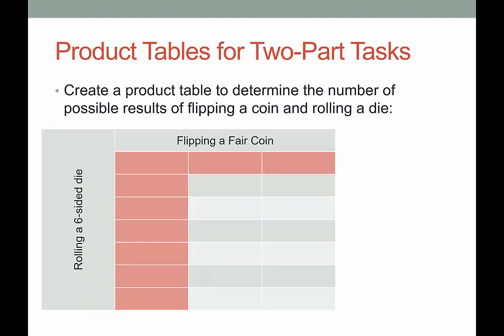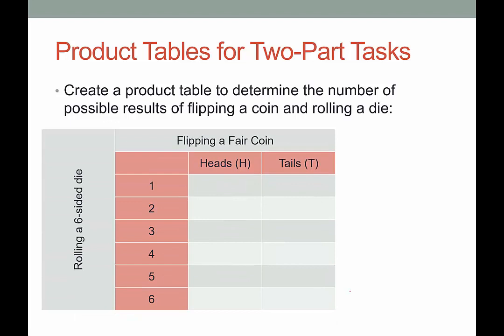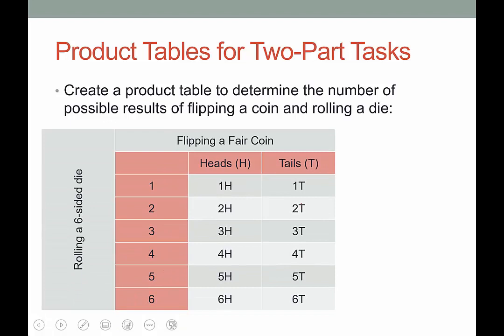For the product table, we're going to label the rows. In this case, rolling a six-sided die — the possible outcomes 1 through 6 go in the header column. For the columns, we have flipping a fair coin, so we label that header row heads or tails. Then we fill in all the gray spaces with the mixing and matching of the possible outcomes from each event. We take the row — say 1 — take the column H, and this gives us one heads. Then one tails, two heads, two tails, and so on.